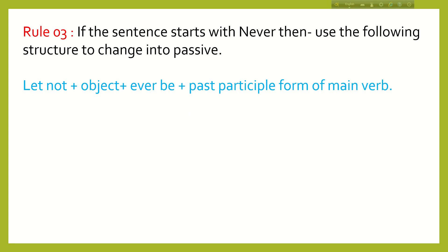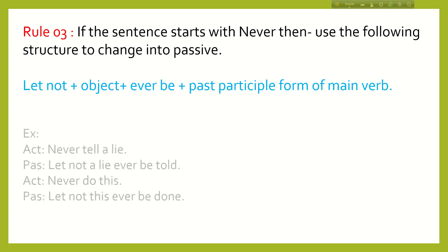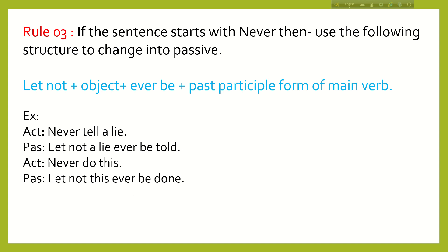Rule 3: If a sentence starts with 'never', it is also an imperative sentence and you have to use the following structure to change it into passive voice: Let not + object + ever + be + past participle form of verb. For example, 'Never tell a lie.' The sentence starts with 'never', so: Let not a lie ever be told.